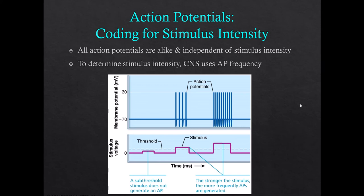Something really heavy, in order for it to be perceived as heavy as opposed to light, produces more action potentials in the same amount of time, as opposed to fewer action potentials in the same amount of time for a lighter stimulus.